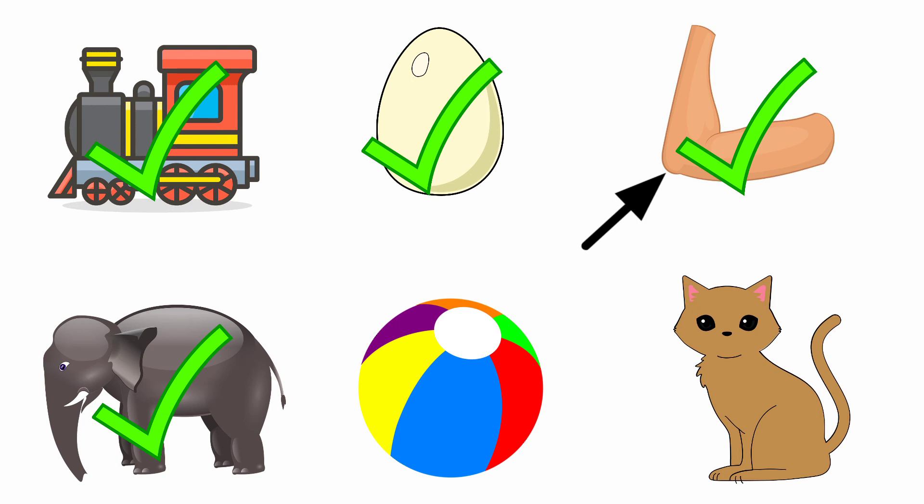Next one — ball. The beginning sound of the picture 'ball' is 'B', and the sound of the letter E is 'eh'. Both are different sounds. So we should not tick the picture ball.